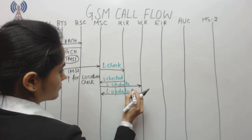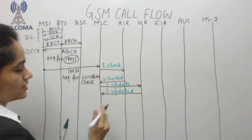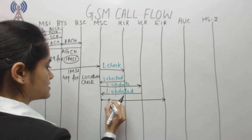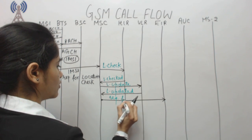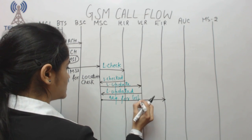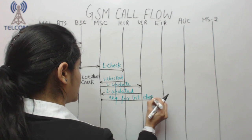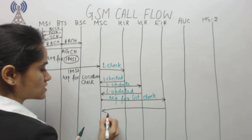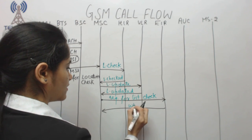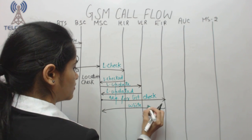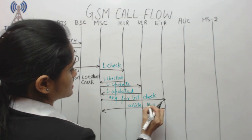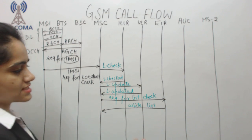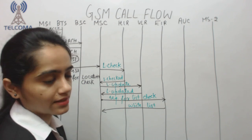Next, the MSC sends a request to the EIR for a list check. The EIR checks the whitelist, graylist, and blacklist. If the user is on the whitelist, the call is processed. If the user is on the blacklist, the call is interrupted at this point.